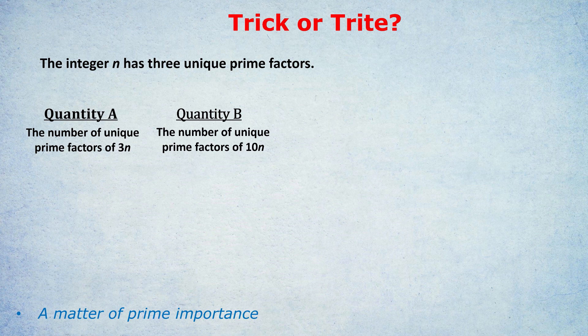And therefore, the 10, when you multiply it by n, you are surely adding two unique prime factors, 5 and 2, compared to if you multiply n by 3, the 3 is only bringing one unique prime factor to the party, just the 3. So it's not adding as many unique prime factors.